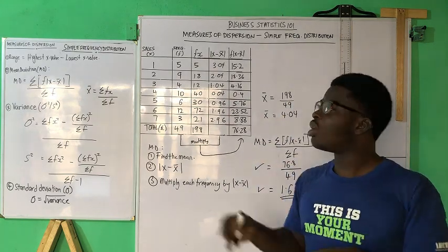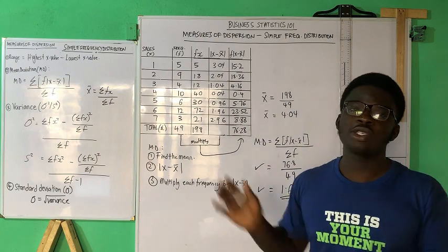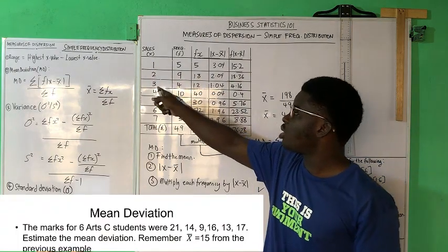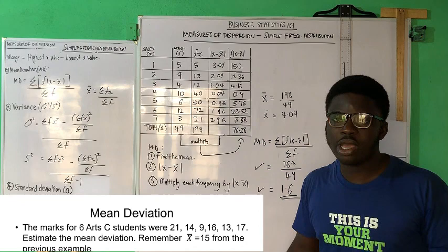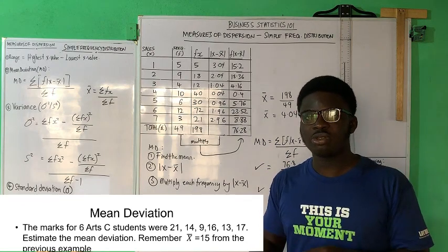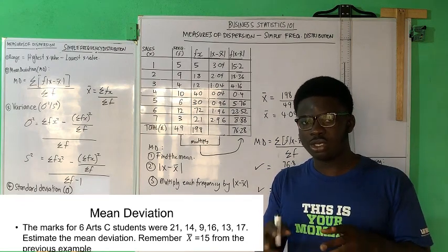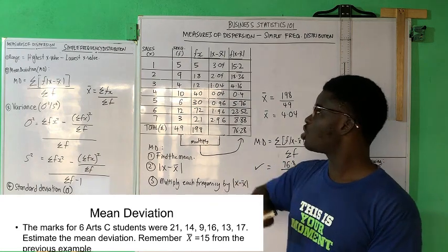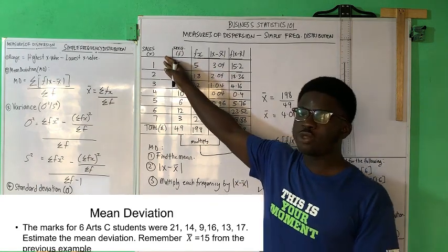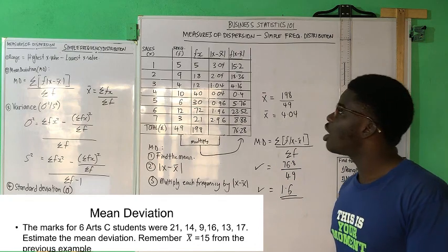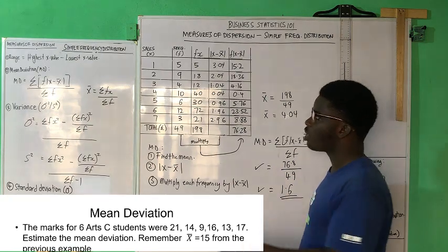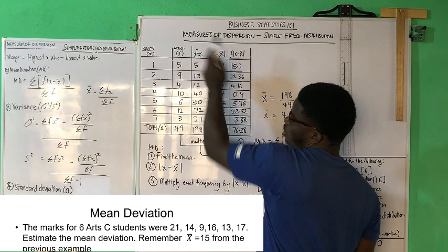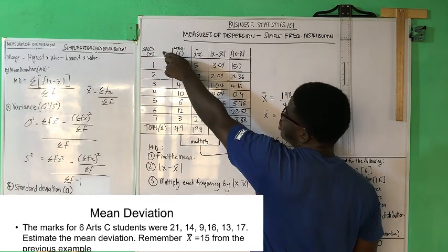Imagine you had figures like one, two, three, four, five, six, seven displayed on screen. You just take those values and use them as your x values. But there will be no frequency column. From that point you proceed straight to a simpler formula for mean deviation — without the frequency weighting.